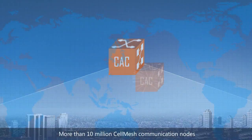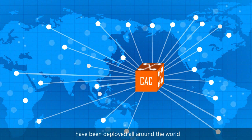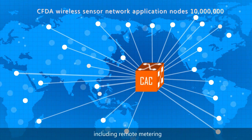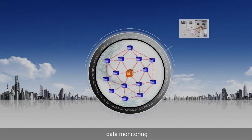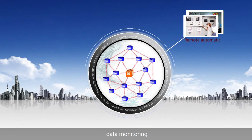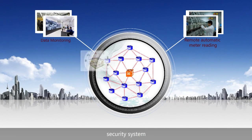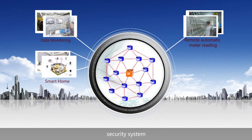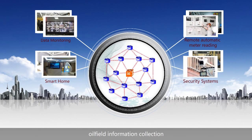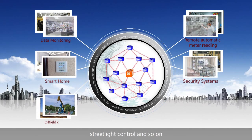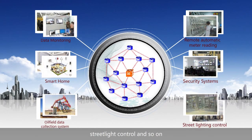More than 10 million CELL MESH communication nodes have been deployed around the world, including applications in remote metering, data monitoring, smart grid, security systems, oil field information collection, streetlight control, and more.